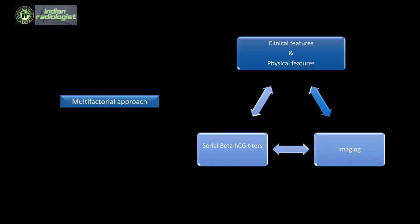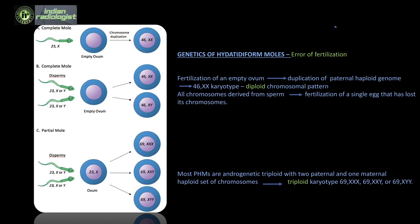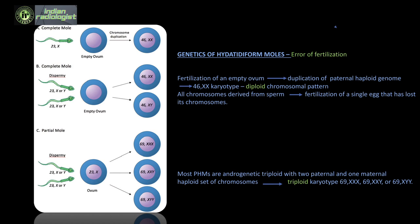For these diseases we need a multifactorial approach using clinical features, lab parameters, and imaging. It arises due to an error of fertilization. In complete mole, a sperm or sperms fertilize an empty ovum giving a diploid chromosomal pattern. In partial mole, sperms fertilize a normal ovum giving a triploid pattern. In complete mole there is absence of the fetus; in partial mole there is an abnormal fetus or fetal demise, often missed and diagnosed only on pathology. A rare variety is coexistent normal fetus with complete hydatidiform mole, where molar gestation and a normal fetus with placenta exist simultaneously.